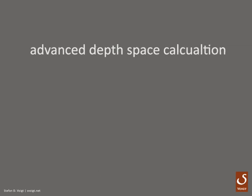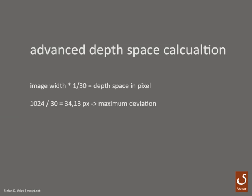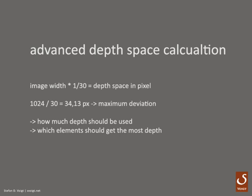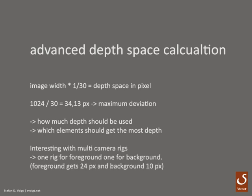So let's get to the advanced depth-based calculation. This depth calculation doesn't depend on target distance or viewer distance but on your image width. You divide your image width by 30 and get the maximum deviation in pixels. Then you can decide how much depth you want to use and which elements should get the most depth, and only based on this you calculate your near and far plane. This is very interesting with multi-camera rigs where you can have one rig for the foreground and one for the background. In our example you can give the foreground 24 pixels and the background only 10 pixels. This is also great for handling over-shoulder shots and long lenses.